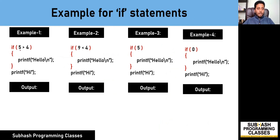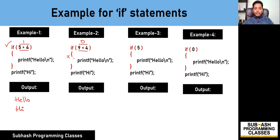In the first example, if 5 is greater than 4 — we know that is true — this condition results in a non-zero value, which is true. Therefore, the control enters the if block and prints 'hello', then comes out and executes the rest of the statements, printing 'hi'. So the output is 'hello' and 'hi'. In example 2, is 9 less than 4? No — the condition becomes false, so the if block is skipped, the program control executes the statement following the if block, and prints 'hi'.